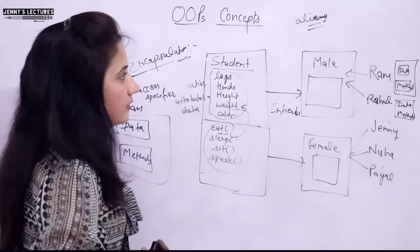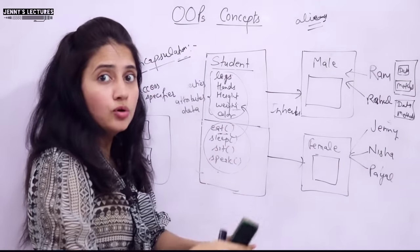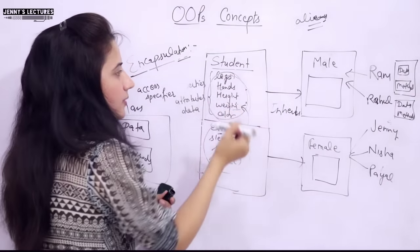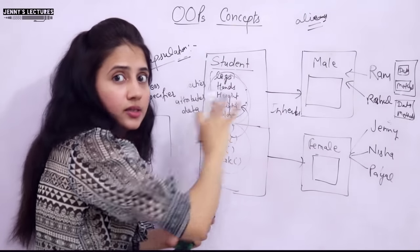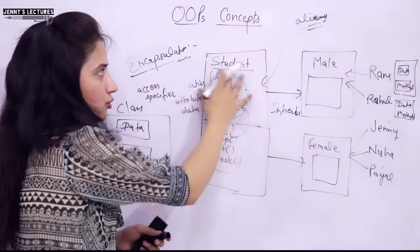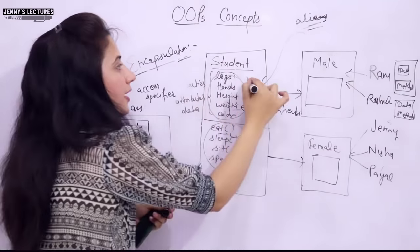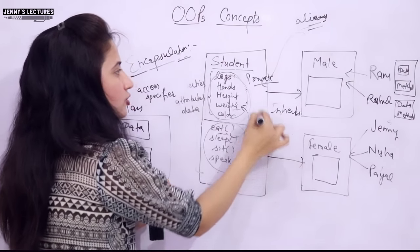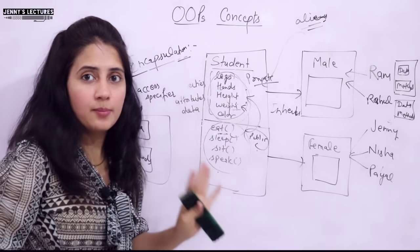Through encapsulation we achieve data security and privacy by keeping data private. No other class can access that data — if another class wants to access it, they communicate through the public functions of that class. Encapsulation is like a shield which prevents your data from being accessed by code outside that shield. The variables of one class can be accessed only by the methods of its own class. To achieve this: keep your data private using the private access specifier and keep your methods public.